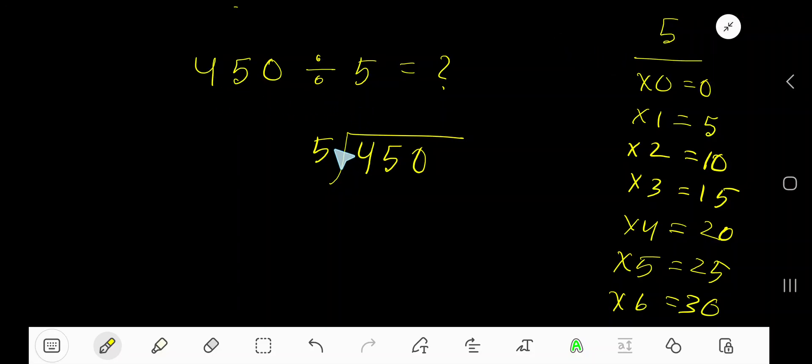450 divided by 5. Here, 5 is the divisor, so we need the multiplication table of 5. 5 times 0 is 0, 5 times 1 is 5, 5 times 2 is 10, 5 times 3 is 15, 5 times 4 is 20, 5 times 5 is 25.